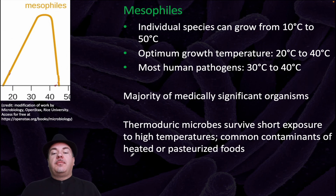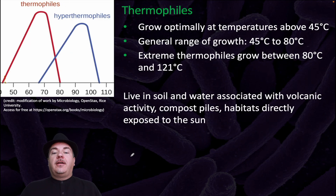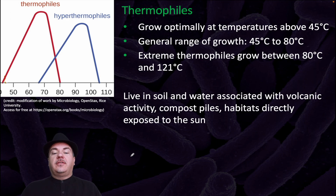Mesophiles are the majority of the medically significant microorganisms. Thermoduric microbes survive short exposure to high temperatures and are common contaminants of heated or pasteurized foods. Thermophiles grow optimally at temperatures above 45 degrees Celsius, with a general range of 45 to 80 degrees Celsius. Extreme thermophiles, or hyperthermophiles, grow between 80 and 121 degrees Celsius, living in soil and water associated with volcanic activity, compost piles, and habitats directly exposed to the sun.